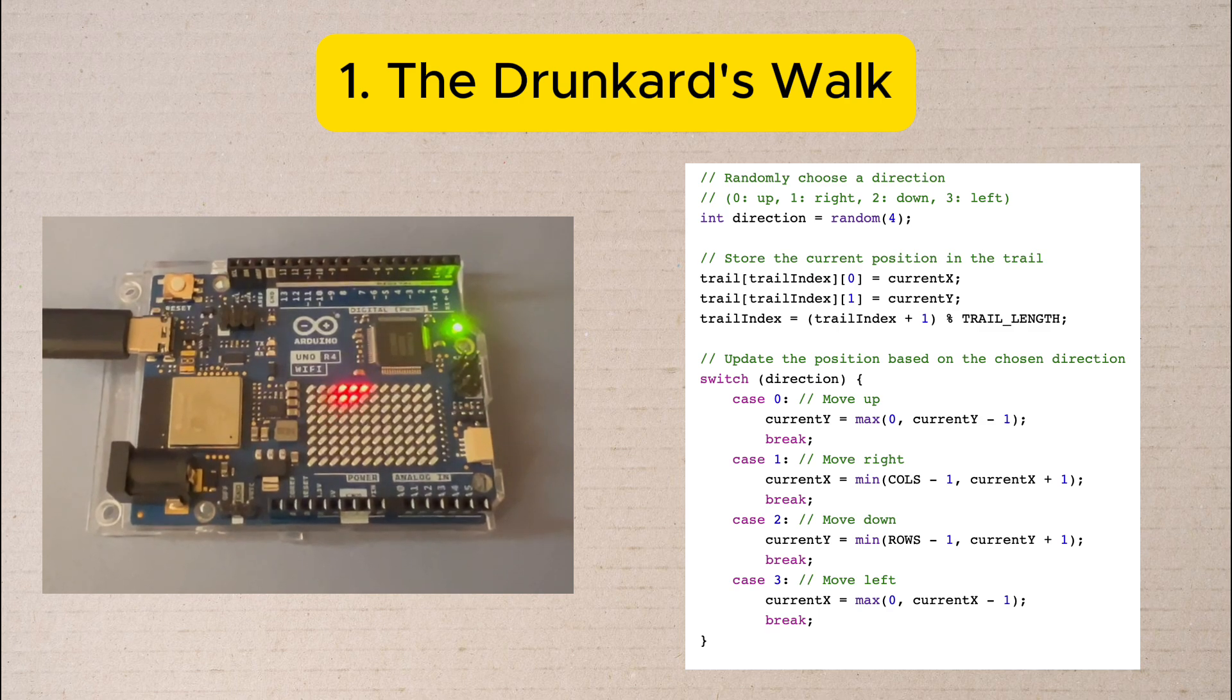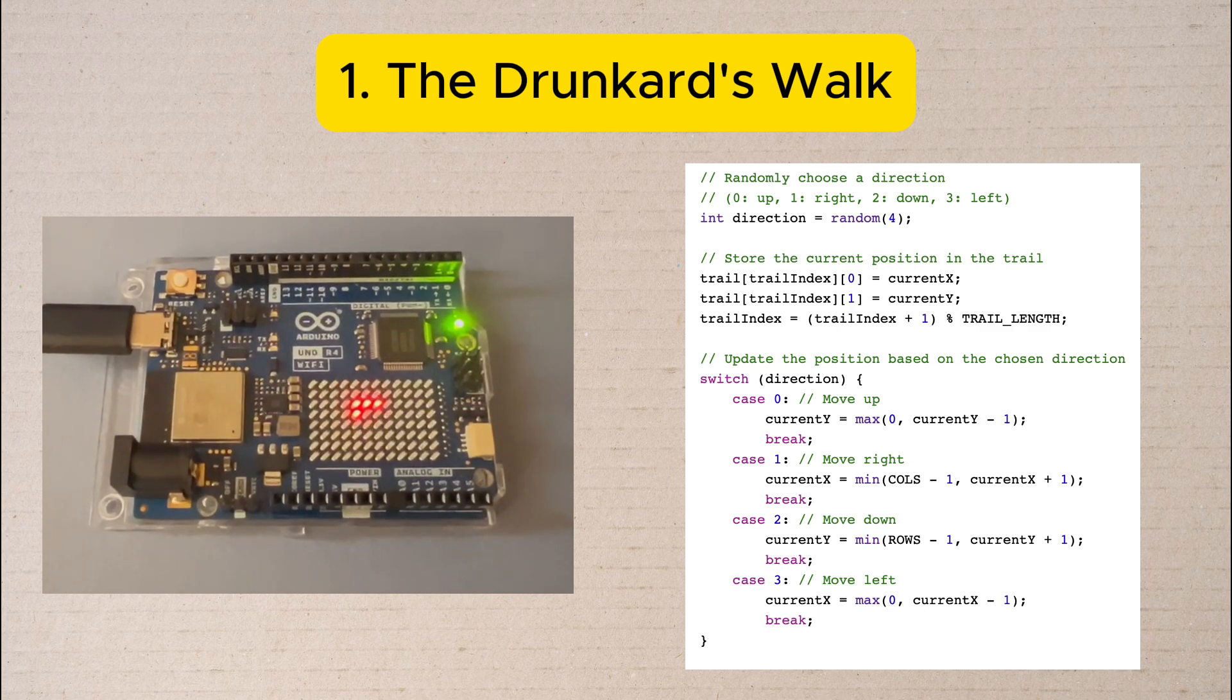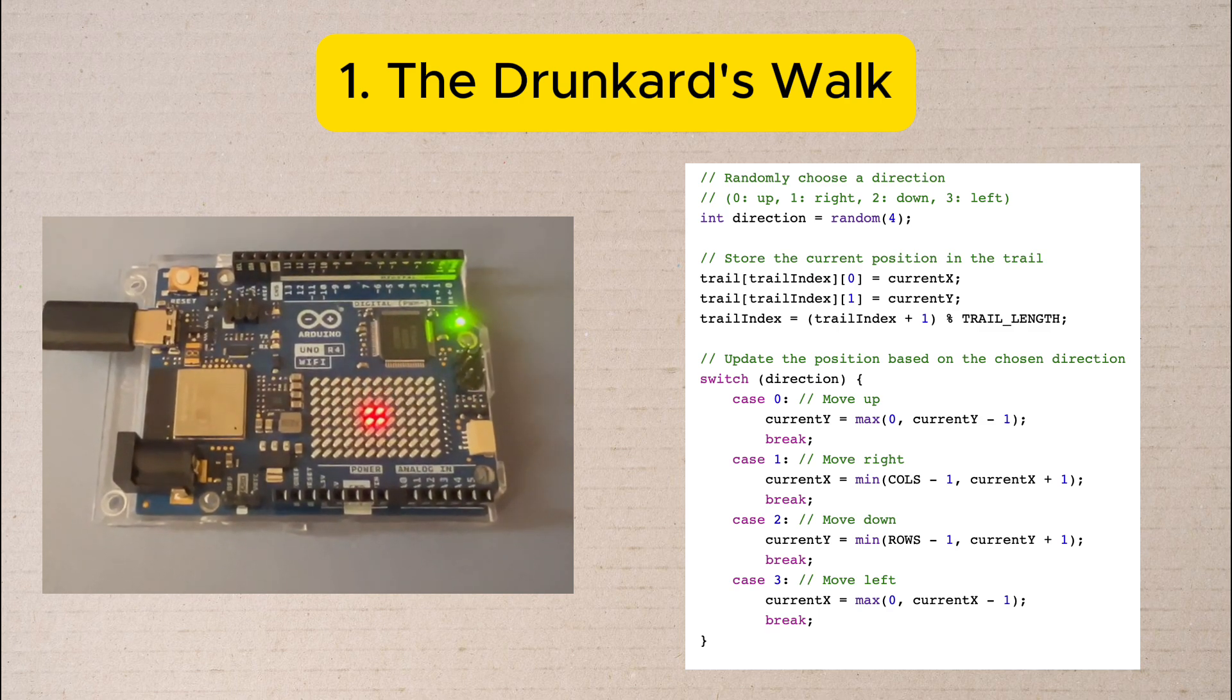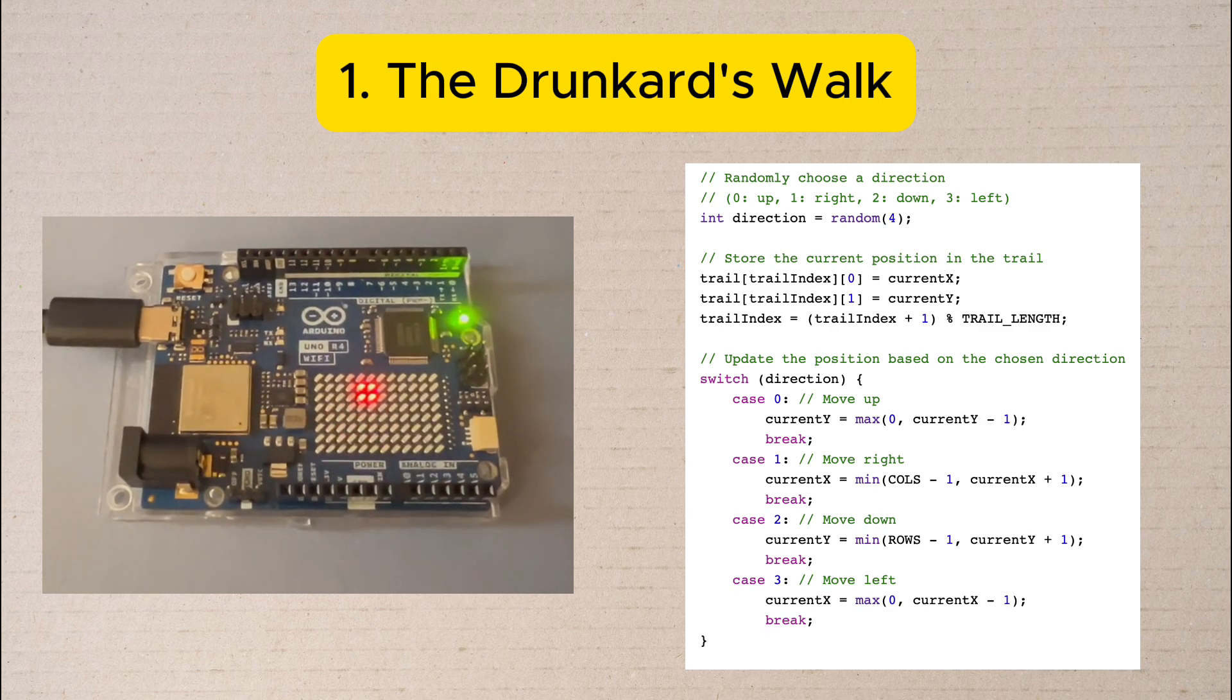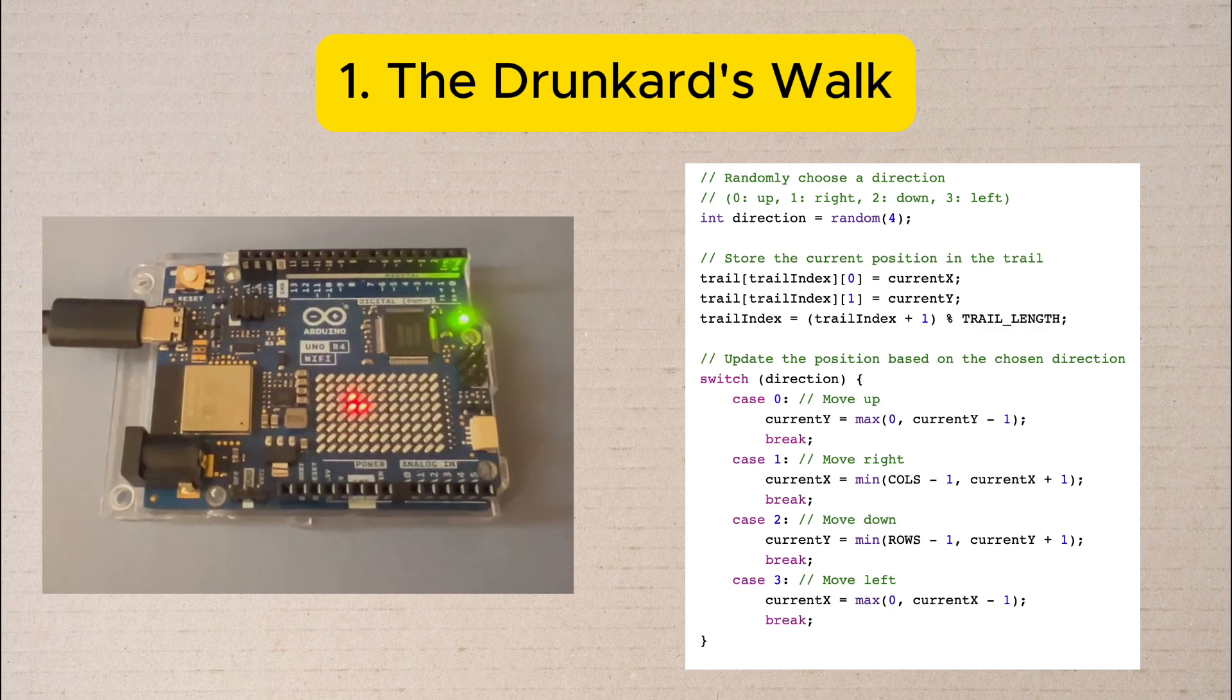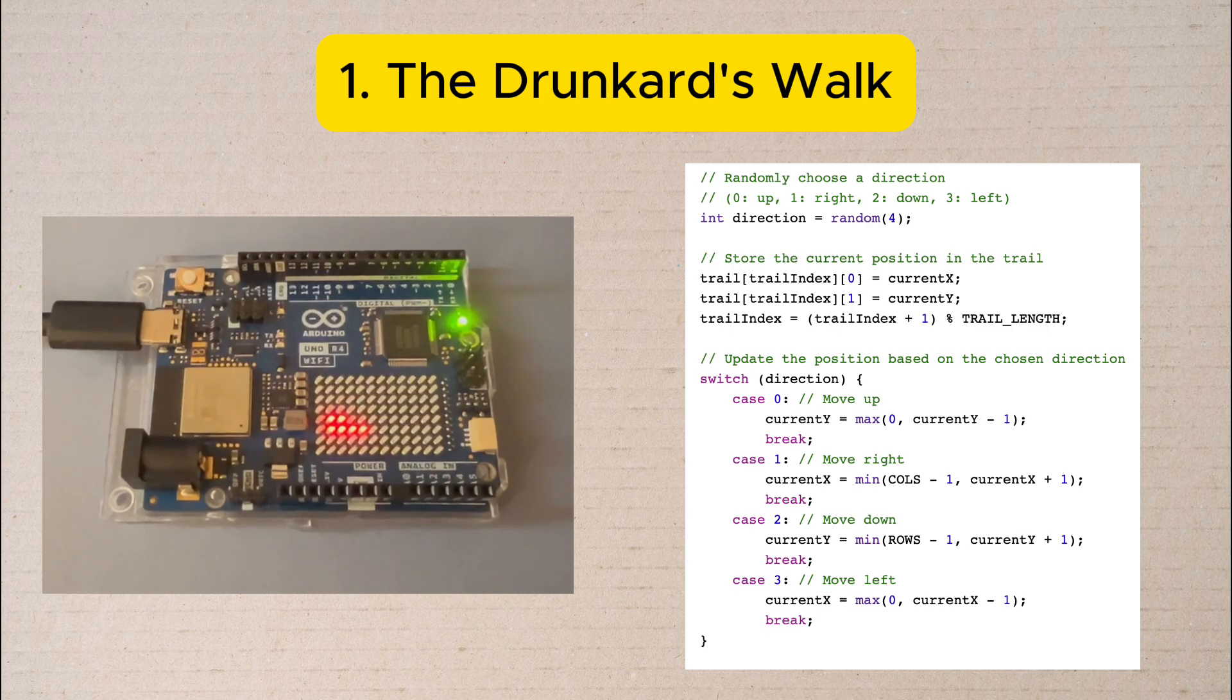If the walker would step off the edge of the display we stop them—they need to stay within bounds. To make the movement more visible we leave a trail of the last five positions lit up like breadcrumbs.